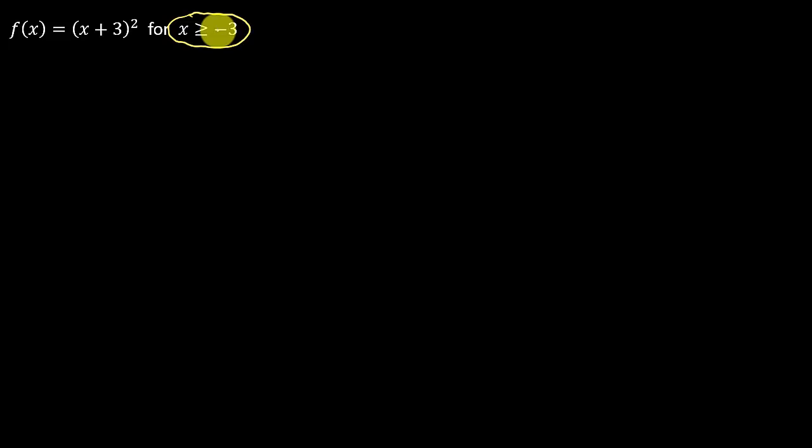So remember, to find the inverse, we want to take the f of x and change it to y. And so that gives us y equals x plus 3 squared. And then we swap the x's and y's,